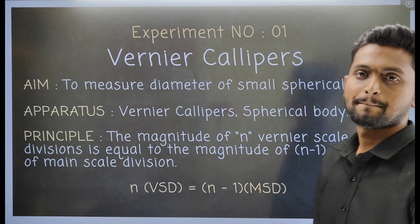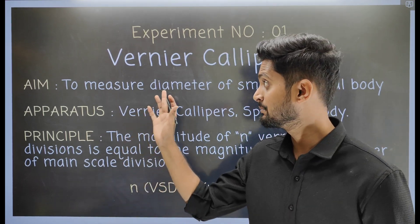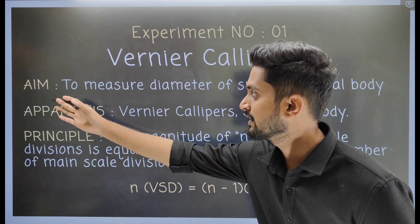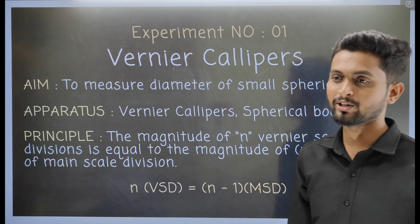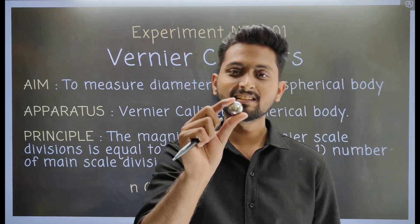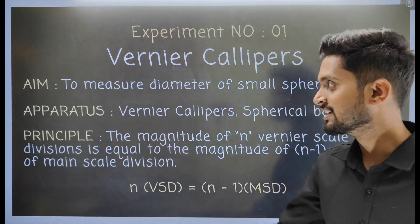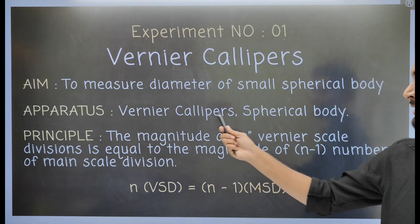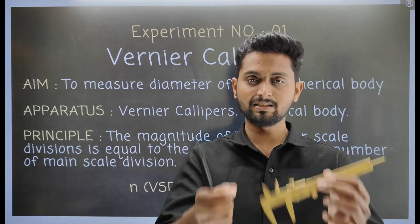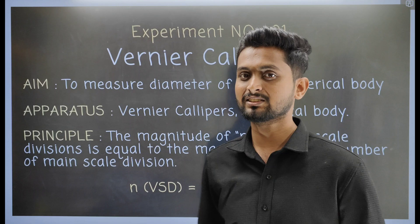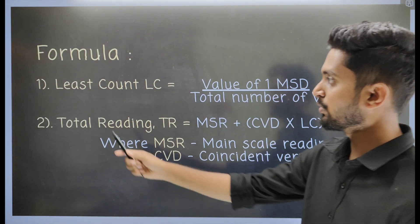This is FSc first-year physics experiment number one, related to the vernier caliper. Our first experimental aim is to measure the external diameter of a small spherical body. The apparatus needed is a vernier caliper and a spherical body.